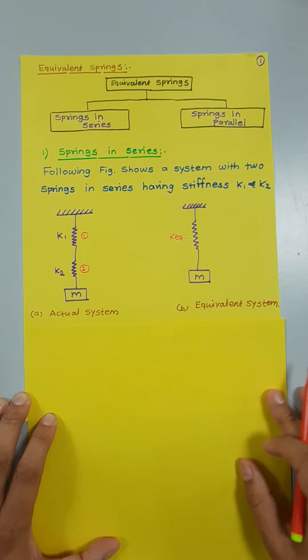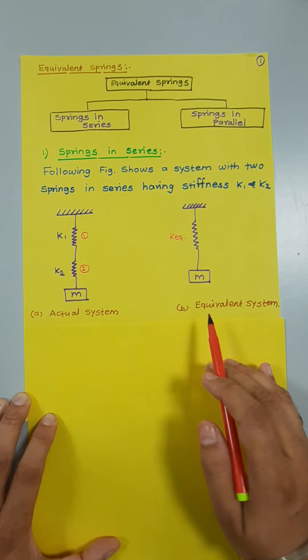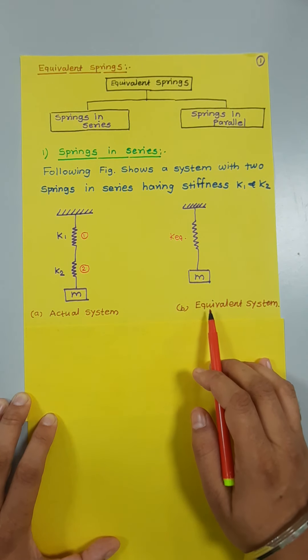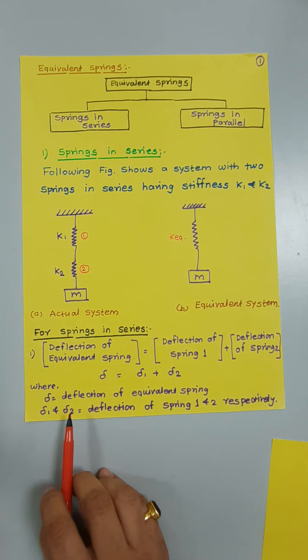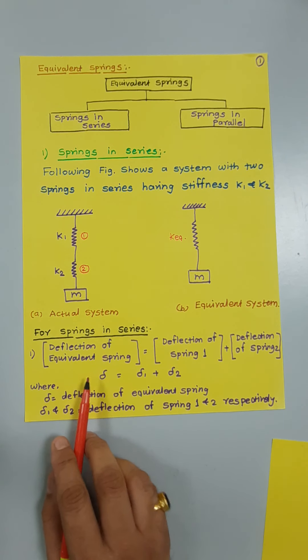Here we have to represent the system as an equivalent system. Figure b shows k1 and k2 replaced by one spring, shown as k equivalent. We now have the first formulation for springs in series — the first condition is that the deflection of the equivalent spring equals the deflection of spring one plus the deflection of spring two.